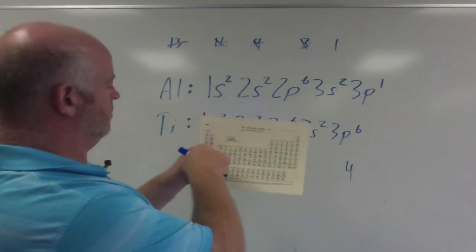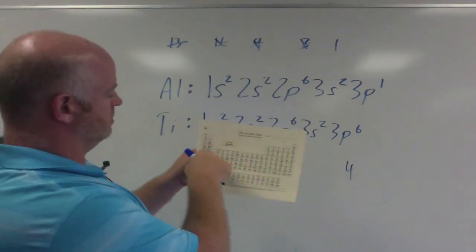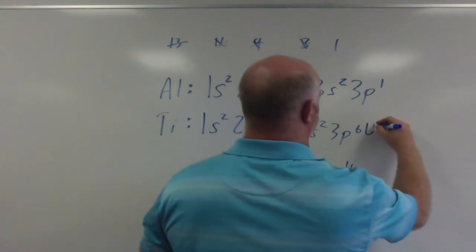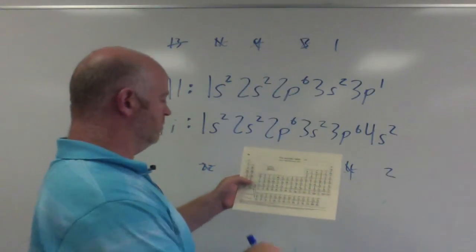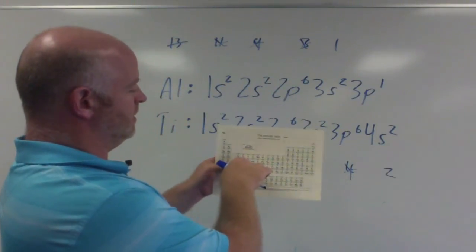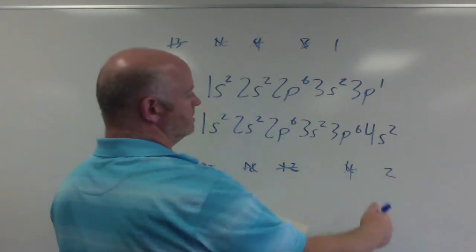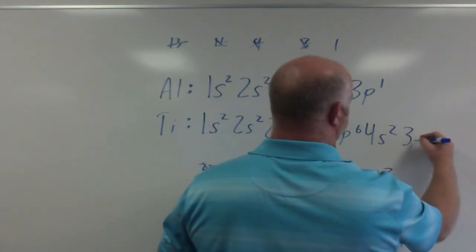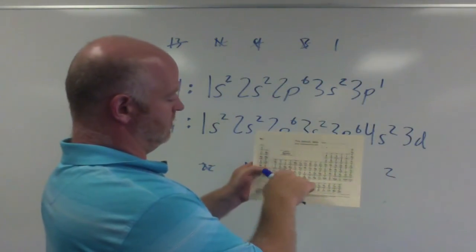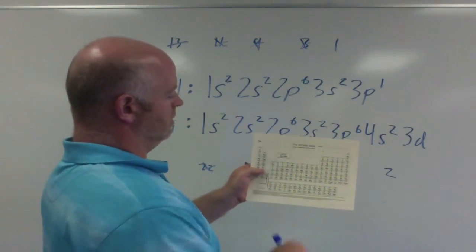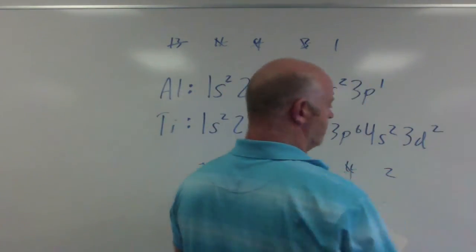So I've gone through 3S and 3P. Now I'm at 4S — on the fourth energy level, in an S-shaped orbital, I put 2 electrons, leaving 2. Then I move to the D block. Remember, D's are always 1 minus the energy level. So if I'm in 4S, the next thing to fill is 3D. Since I have 2 electrons left, I get 2 electrons in the 3D, and then I'm done.